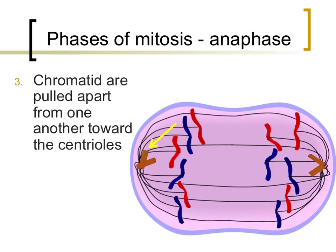What happens after metaphase is that the spindle fibers pull on the chromosomes until individual chromatids are pulled apart from one another towards the centrosomes. This phase of mitosis is referred to as anaphase.